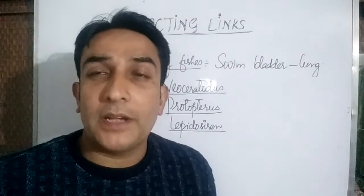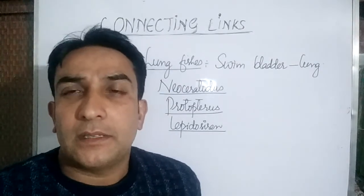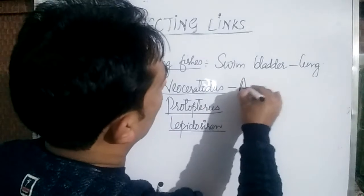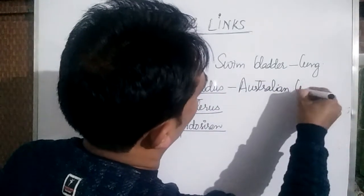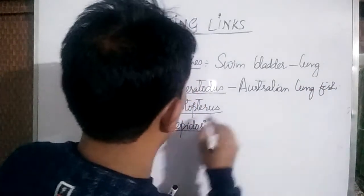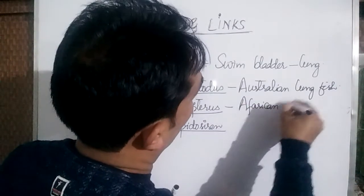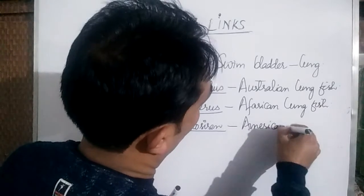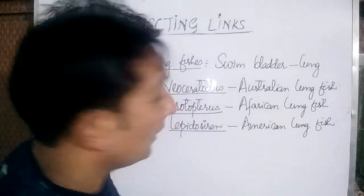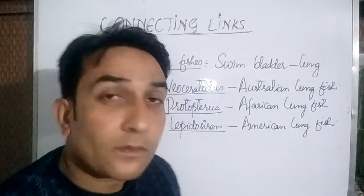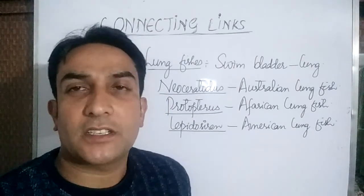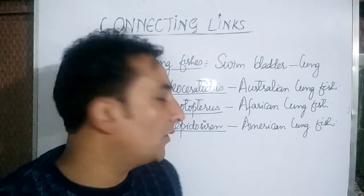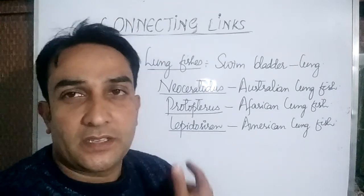This is a very important point regarding NEET examinations. You may be asked about the common names of the lungfishes. Neoceratodus is known as the Australian lungfish, and Protopterus is known as the African lungfish. In the NEET examination you may be asked which among Neoceratodus, Protopterus, and Lepidosiren is the Australian lungfish or the American lungfish, so be sure to know these names.